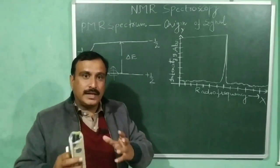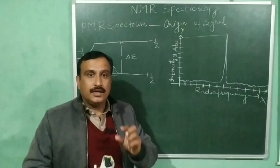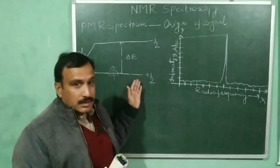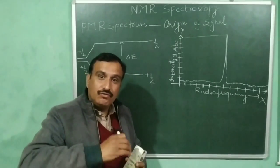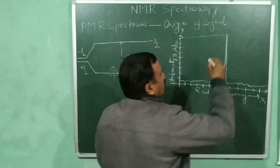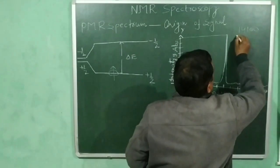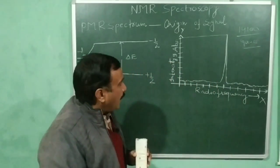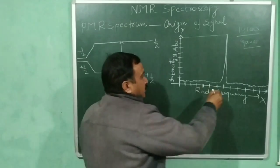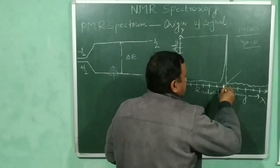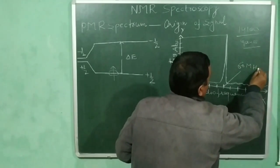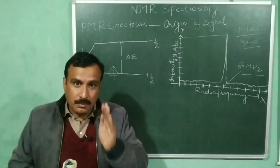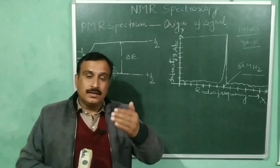We can obtain a PMR spectrum of a compound in two ways. In the first method, we keep the magnetic field constant and vary the radio frequencies. When we keep the magnetic field constant at 14,100 Gauss and vary the radio frequency, then the proton absorbs at a frequency of 60 megahertz.